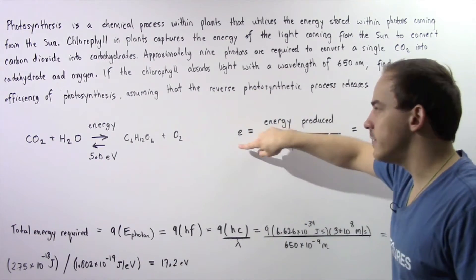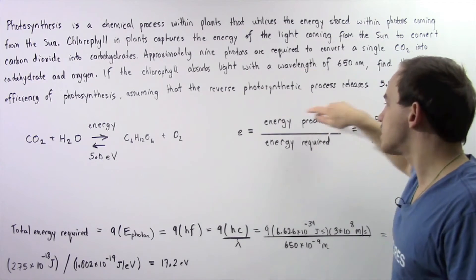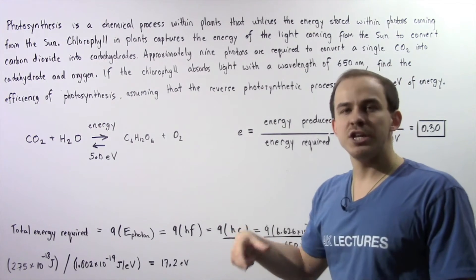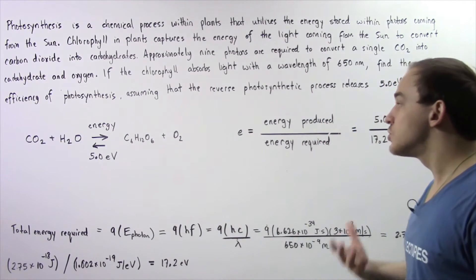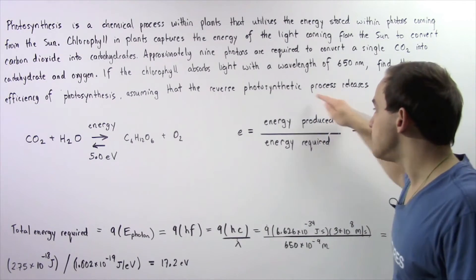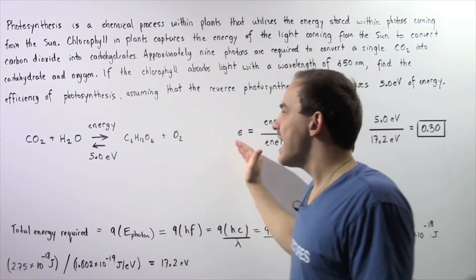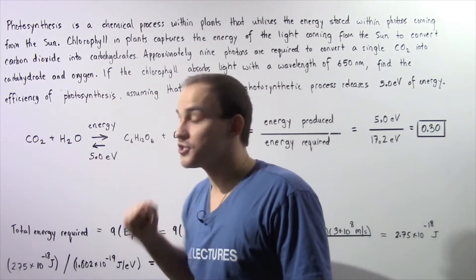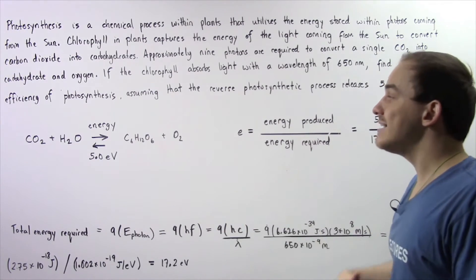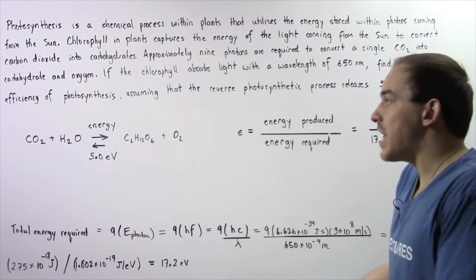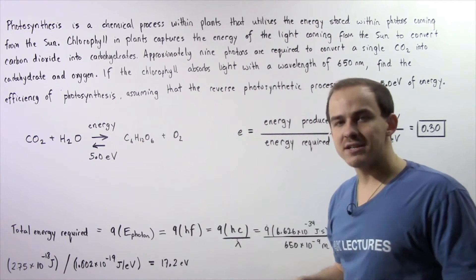The efficiency is given by the energy produced divided by the energy that is required. The energy produced is the energy released in the reverse process, and the energy required is the energy taken up in the forward endothermic process.